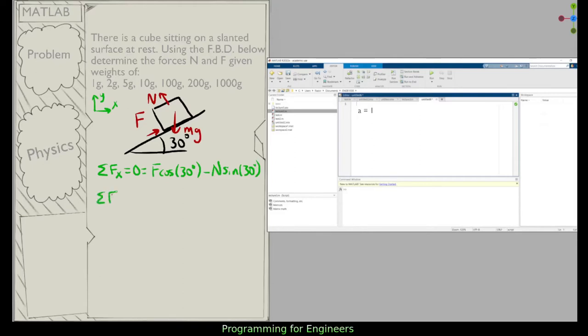And I'll look at the sum of the forces in y, so the forces in y equal 0. And here I have F sine of 30 degrees plus N cosine of 30 degrees minus mg.